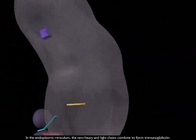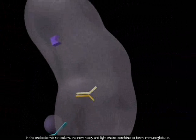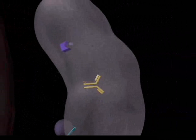In the endoplasmic reticulum, the new heavy and light chains combine to form immunoglobulin.